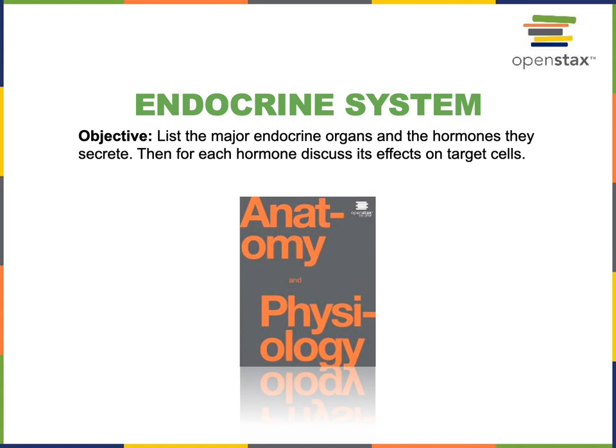This video will cover the third portion of the following objective from the endocrine system: list the major endocrine organs and the hormones they secrete, then for each hormone discuss its effects on target cells.